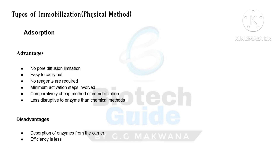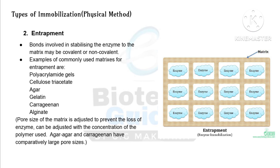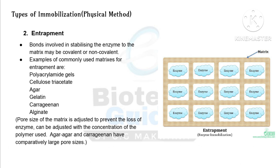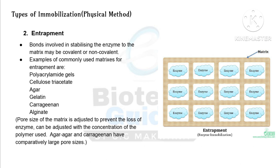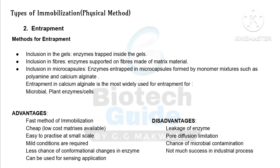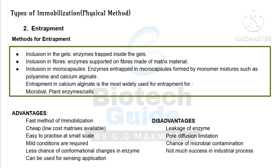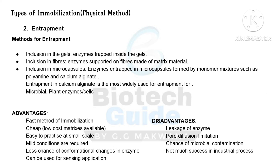Second, in physical immobilization — entrapment. The matrix may attach to the enzymes or cells by covalent or non-covalent bonds. Matrices used include polyacrylamide gels, cellulose triacetate, agar, gelatin, carrageenan, and alginate. The pore size of the matrix is adjusted to prevent loss of enzyme; this can be adjusted with the concentration of polymer used. Agar and carrageenan have comparatively large pore sizes. Methods of entrapment: inclusion in gels, inclusion in fibers, or inclusion in microcapsules.